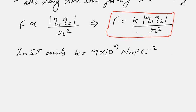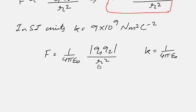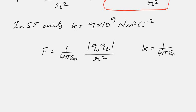Coulomb's Law is more often written as F equals 1 over 4πε₀ times |q1||q2| divided by r squared. Here k is written as 1 over 4πε₀. There is no physical derivation or physical logic behind writing k as 1 over 4πε₀ — it is just for mathematical convenience, as later in this course you will see that it simplifies calculations and some formulas.